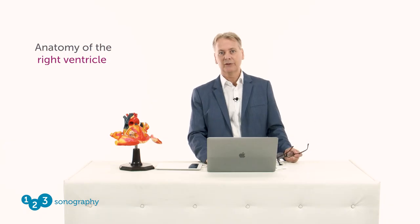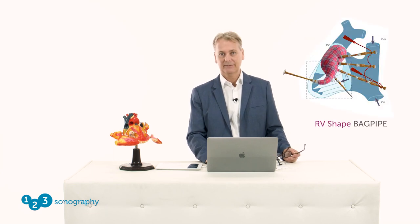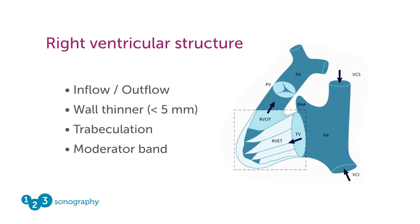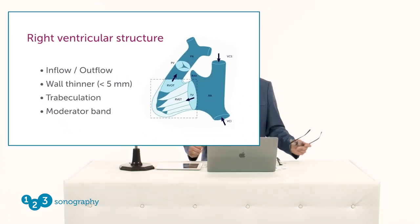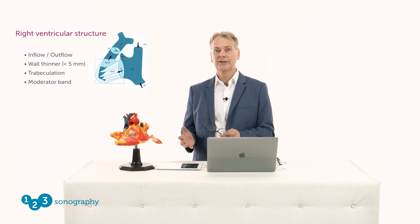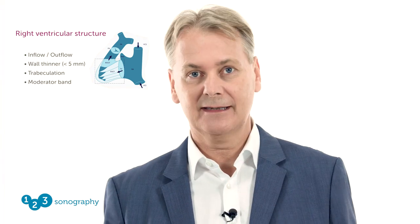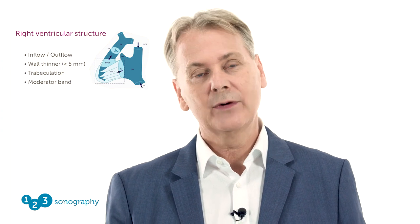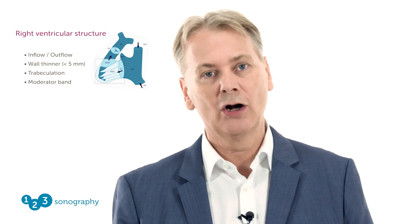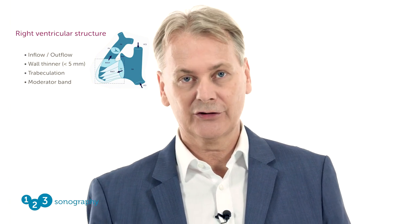Now let's move to the anatomy of the right ventricle. What is so unique about the right ventricle? Its shape. It resembles that of a bagpipe, with a portion of the right ventricle which we call the inflow and outflow tract. This is the inflow and this is the outflow tract. The wall is much thinner in the right ventricle than that of the left ventricle, because the pressure in the right circulation is much less than in the left or systemic circulation. We have a lot of trabeculae in the right ventricle, and we have a very prominent structure which we call the moderator band. We'll take a closer look at that structure a little bit later.